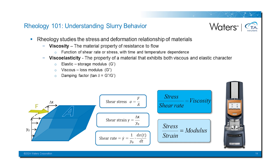Rheological testing can characterize both viscosity — the material property of resistance to flow, characterized as a function of shear rate, stress, time, and temperature — and viscoelasticity, the property of materials exhibiting both viscous and elastic character. Viscoelasticity is characterized by the elastic or storage modulus G prime, the viscous or loss modulus G double prime, and the damping factor tan delta, which is the ratio of the loss modulus to the storage modulus.